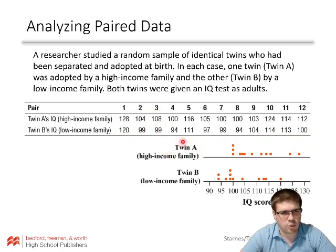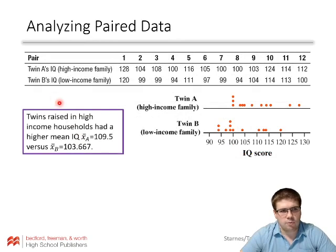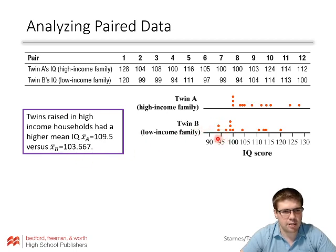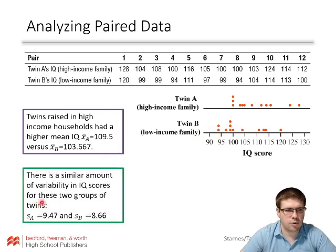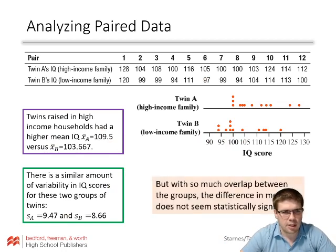If we plot these, we can look at the two groups separately. We can see the IQ scores for twin A — the high-income family twins — and the low-income IQ scores for the twins placed in those families. Twins raised in high-income households had a higher mean IQ: X-bar sub A is 109, whereas X-bar sub B is 103. There is a similar amount of variability in IQs for both groups — the range looks about the same, and the standard deviations are not very different. But with so much overlap between the groups, the difference in means does not seem statistically significant.